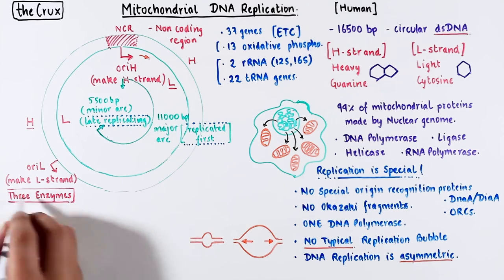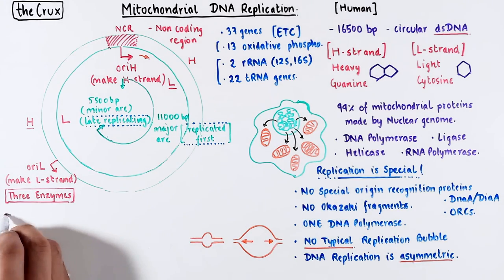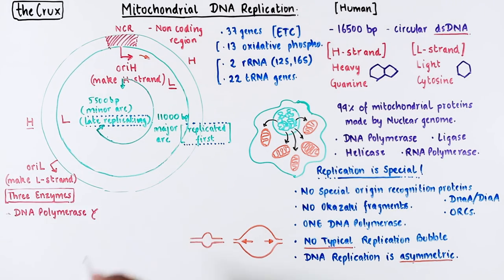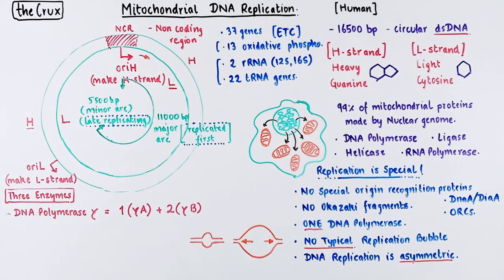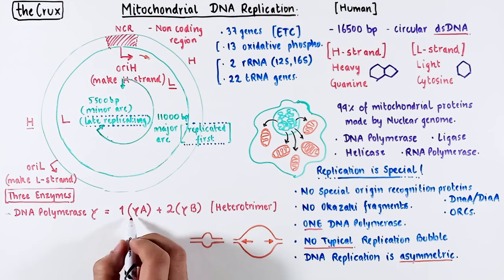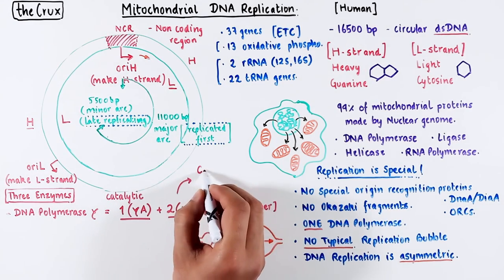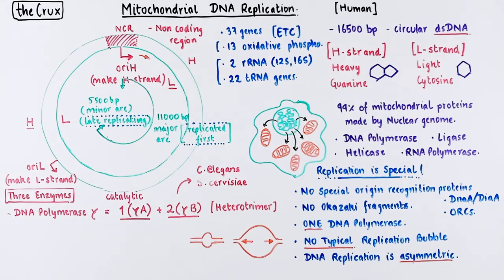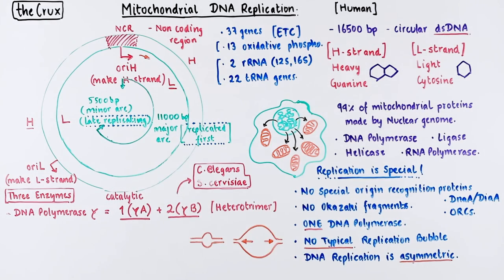Before we get into the mechanism, there are three enzymes to keep in mind. The one and only DNA polymerase gamma, which is made of one alpha subunit and two beta subunits — so it is a heterotrimer. The alpha subunit is the catalytic core. The betas are accessory and help stabilize the alpha subunit. Some species don't even have the beta subunit, so don't take it too seriously.